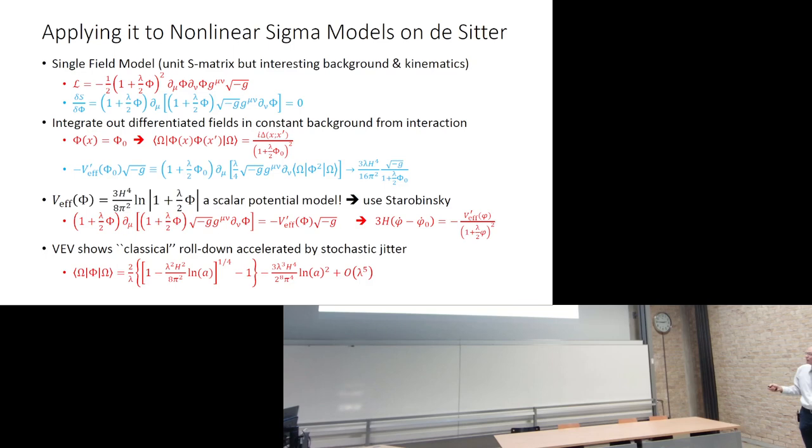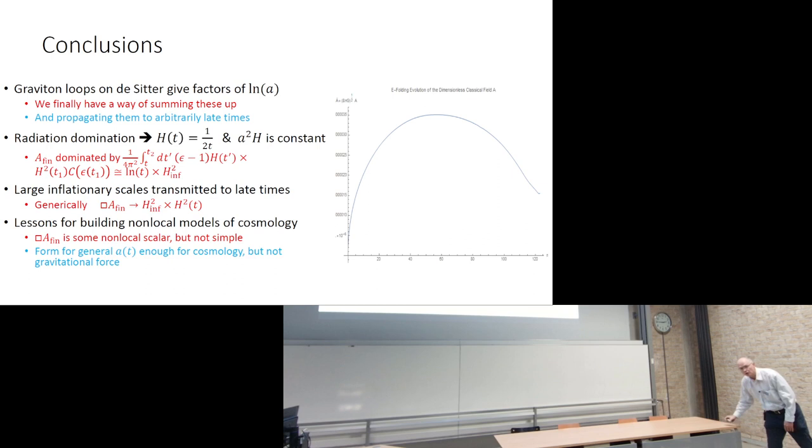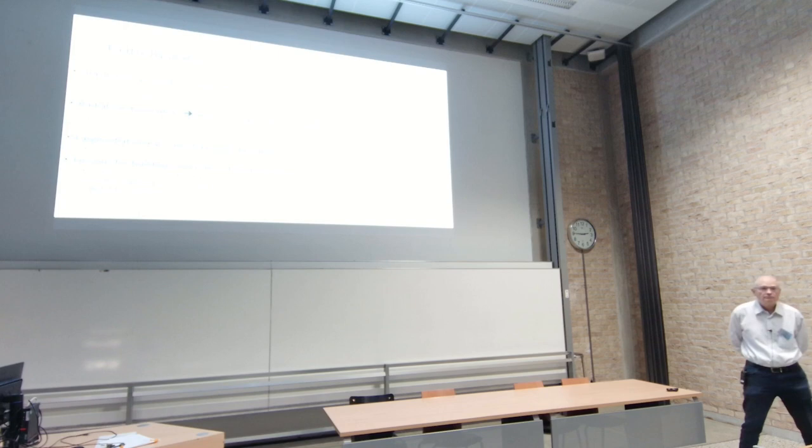I will stop there since that's my conclusions. Thanks very much. So we have time for one or two questions. Bunch Davies vacuum. The question was which state are these done in and the answer is Bunch Davies vacuum. So we don't have any ambition to solving the Trans-Planckian problem. We don't understand why the universe ends up in Bunch Davies vacuum or even if it does end up in Bunch Davies vacuum at the start of inflation. I think those are all excellent questions, but we don't have any traction on that.